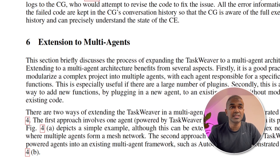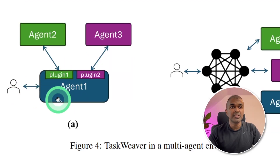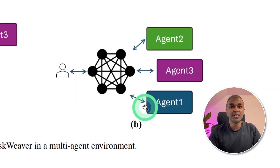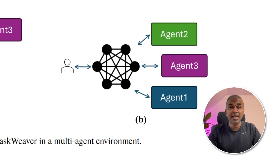One big advantage of this is it can extend to multi-agents. Taskweaver can run on its own, but when we extend to multi-agents, one method is that we can invoke Autogen agents through plugins, or one of the Autogen agents could be your code viewer. This is really groundbreaking — it gives extra power to agents to do domain-specific tasks.